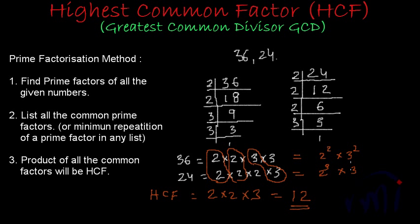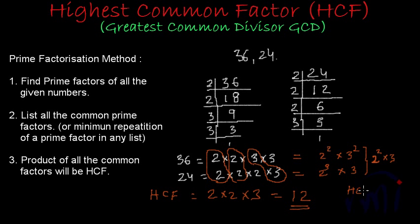We don't write power 1, so just 3. From here, following the minimum repetition rule: the minimum repetition of 2 across both lists is 2, and the minimum repetition of 3 is 1. So the HCF or GCD = 2² × 3 = 4 × 3 = 12. This is what is meant by the minimum repetition of any prime factor.